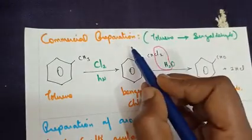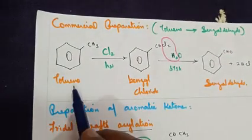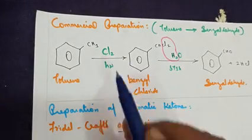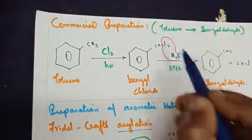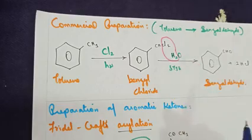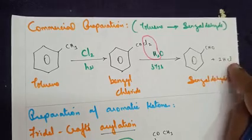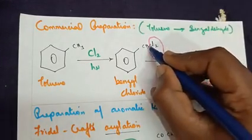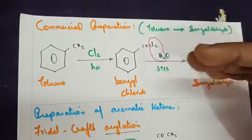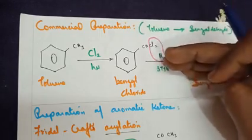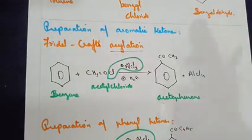Moving on to the commercial preparation of benzaldehyde from toluene. Toluene is treated with chlorine to give benzal chloride, which has the formula C6H5CHCl2. Further, when benzal chloride is treated with water (H2O), two molecules of HCl are eliminated, and we get benzaldehyde. That covers the preparation of aromatic aldehydes.